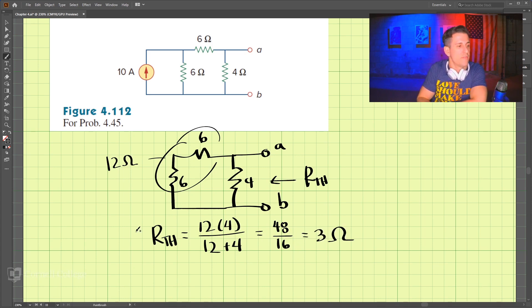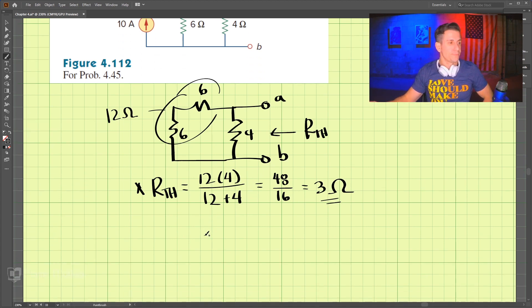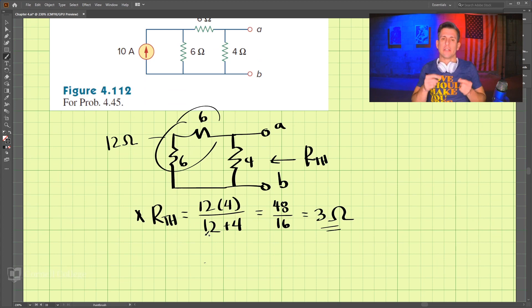So we have the Thevenin resistance is 3 ohms. Now we take the circuit and try to find the Thevenin voltage.